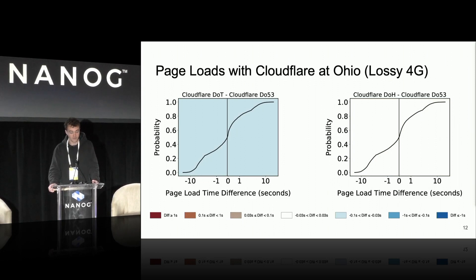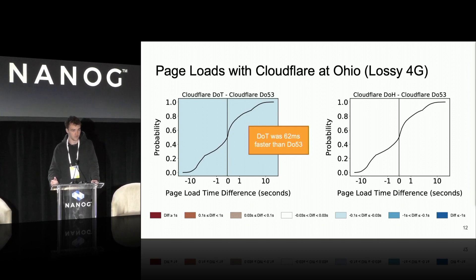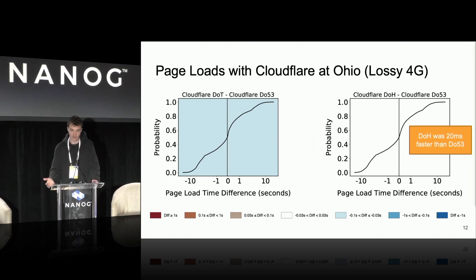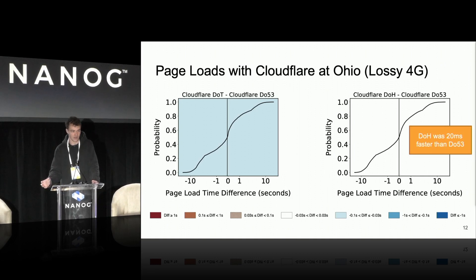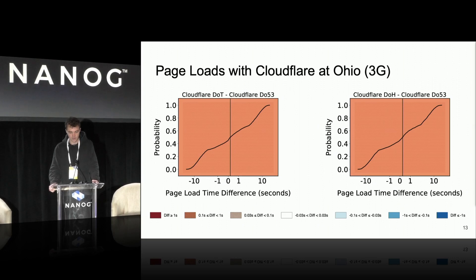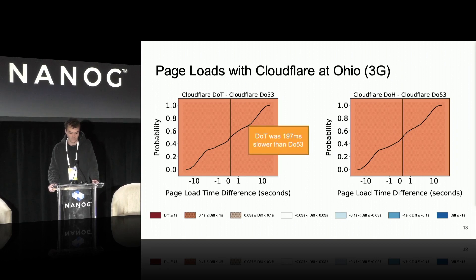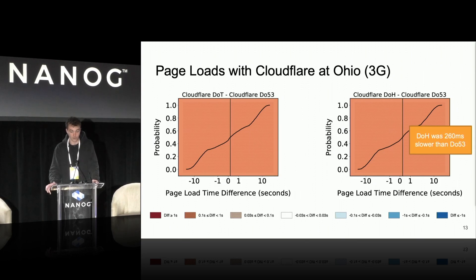On lossy 4G — the same 4G settings with an additional 1% packet loss — we're seeing even more interesting behavior. DOT has gotten 62 milliseconds faster than traditional DNS in page load times, which we didn't expect at all. DOH has also gotten faster than DO53 in page load times, now 20 milliseconds faster. There's an interesting trend where under worsening network conditions, DOT and DOH are actually able to outperform traditional DNS. However, everything collapses at 3G conditions: DOT is 197 milliseconds slower than DO53, and DOH is 260 milliseconds slower.